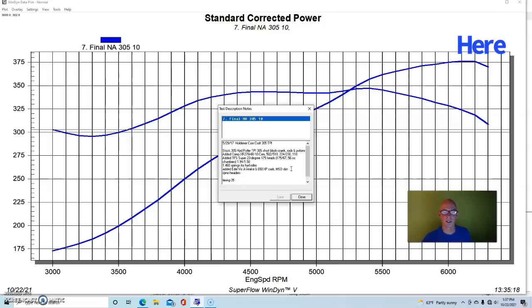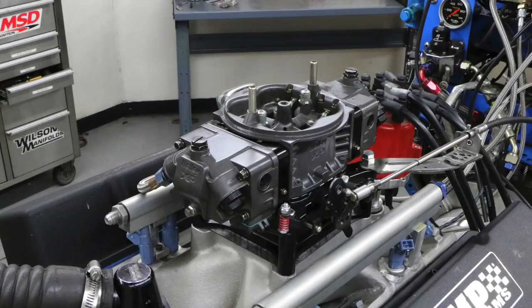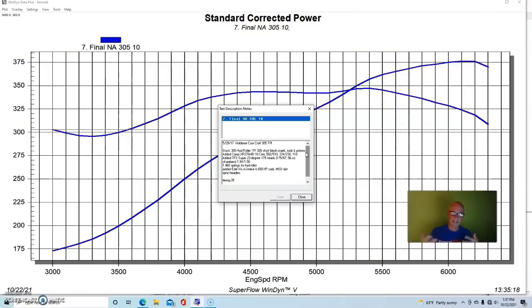So it would have been better to not have that on this combination. Before we ran the nitrous, we ran it with an Edelbrock Victor Jr single plane intake, an RPM Air Gap probably would be a better choice, and a 650 carburetor. We had an MSD distributor and inch and three quarter long tube headers.